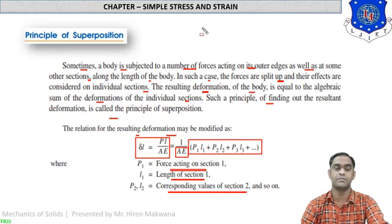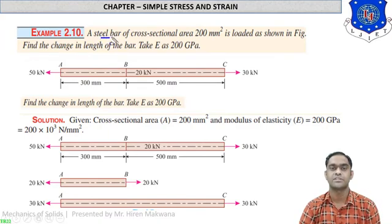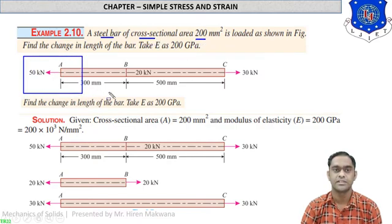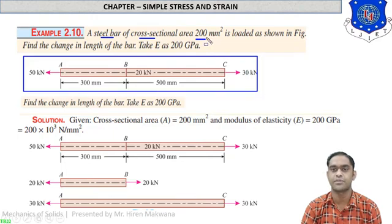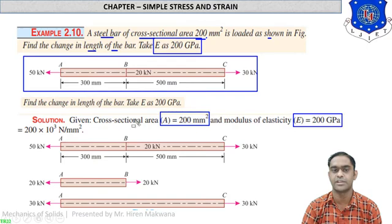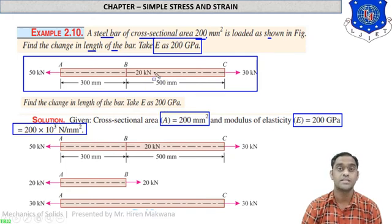Let us look at some numericals so that you will be very clear about this. Example 2.10: a steel bar of cross-sectional area 200 mm² is loaded as shown in the figure. Find the change in length of the bar. Take Young's modulus as 200 GPa, which means 200 × 10³ N/mm².